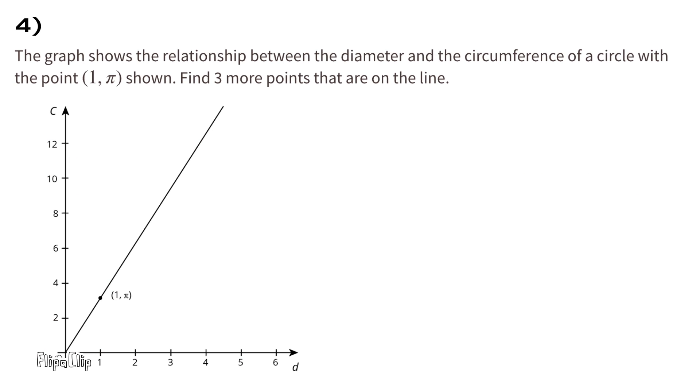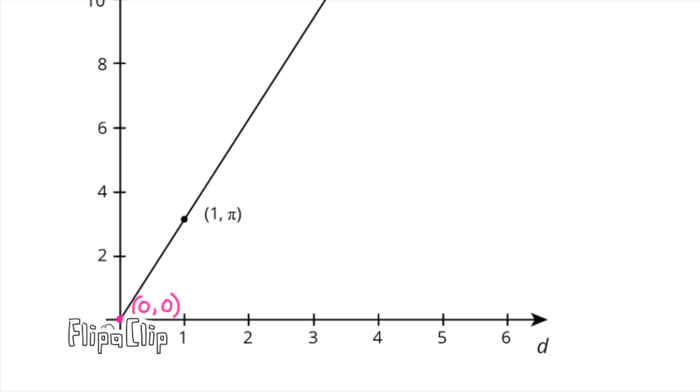Number 4. The graph shows the relationship between the diameter and the circumference of a circle with the point 1 and pi shown. Find three more points that are on the line. I placed the coordinates 0 and 0 for one point, and coordinates 2 and 2 times pi for a second point, and coordinates 3 and 3 times pi for a third point.